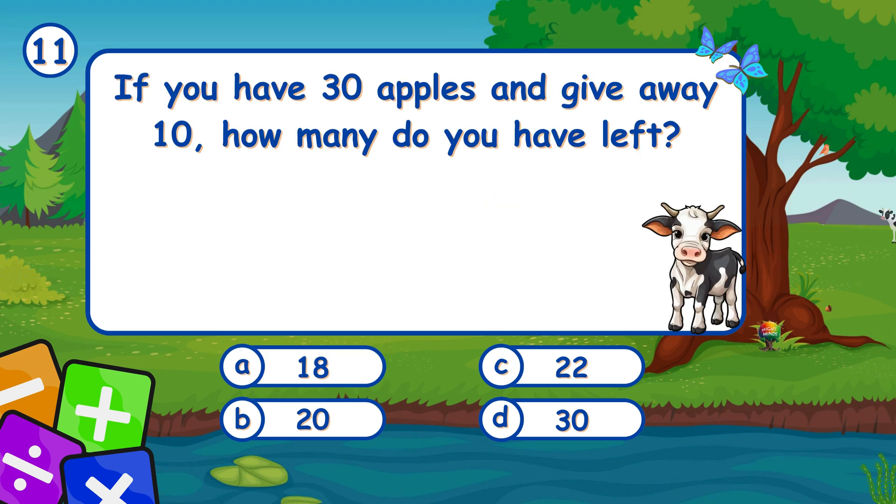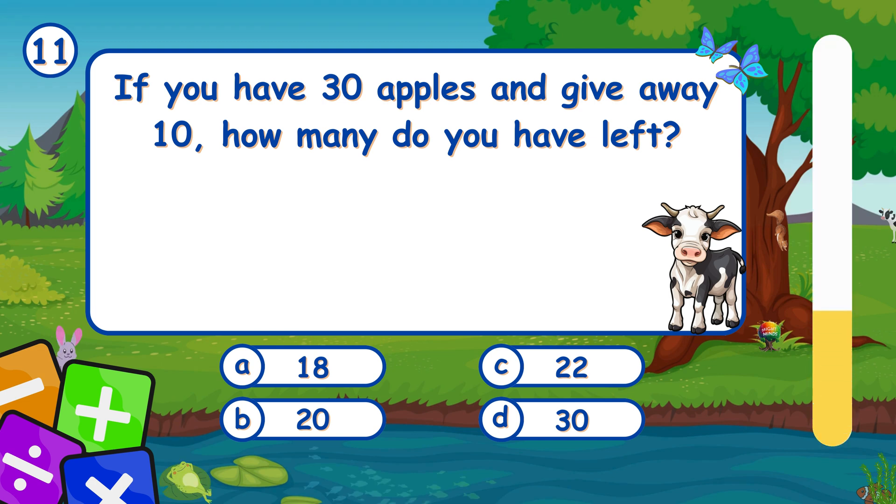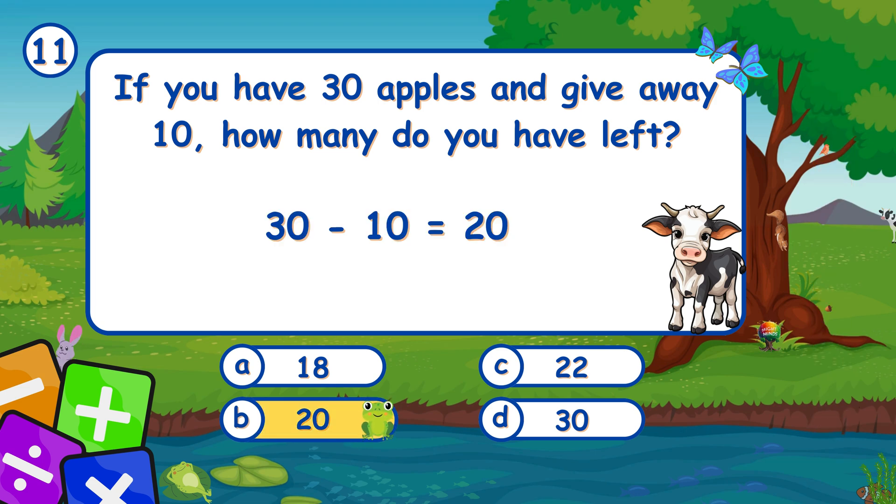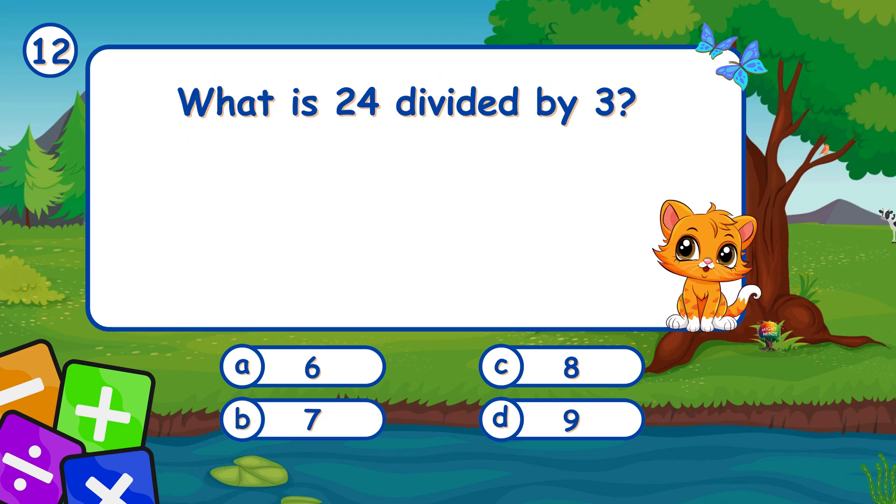If you have 30 apples and give away 10, how many do you have left? It's B, 20. Subtracting 10 from 30 leaves 20. What is 24 divided by 3? It's C, 8. 24 divided by 3 equals 8.